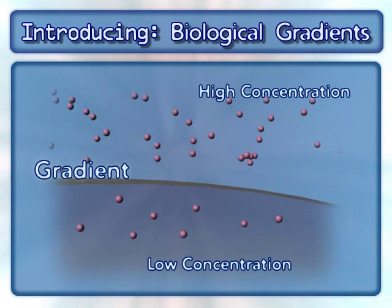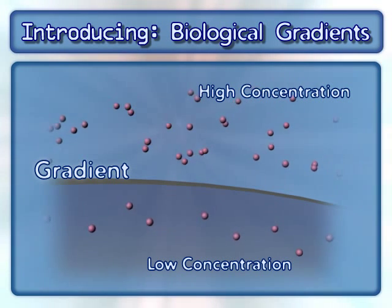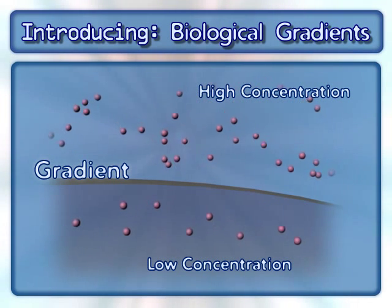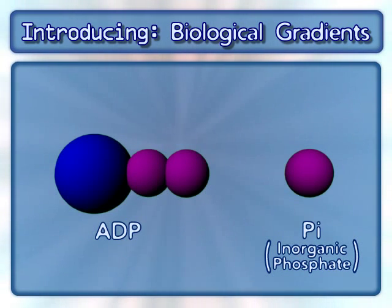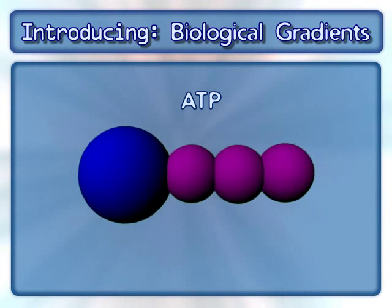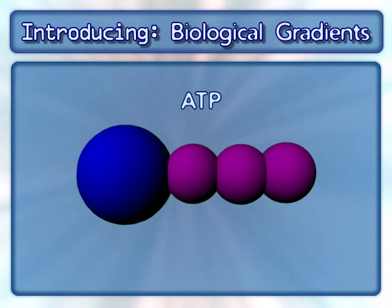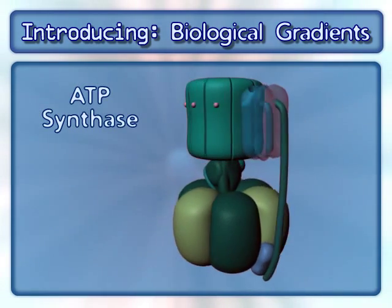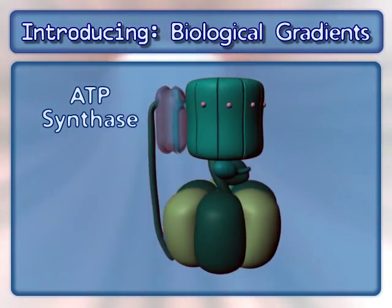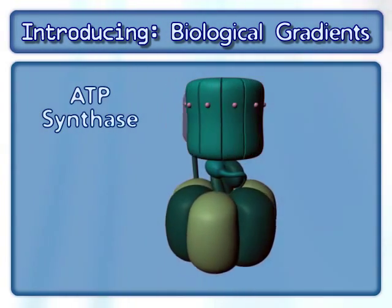This animation will demonstrate how the potential energy that results from a hydrogen ion gradient uses ADP and inorganic phosphate, also known as Pi, to synthesize ATP. This process involves an enzyme complex called ATP synthase.